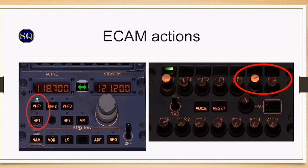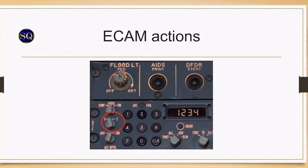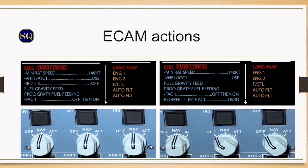Both ACP 1 and 2 remain available, and CM2 can still transmit through their ACP. Only transponder 1 is available. ADIRS 2 and 3 will automatically be lost after 5 minutes, so switching them off will save battery charge.